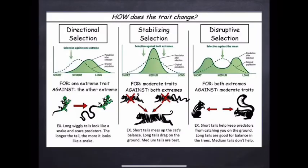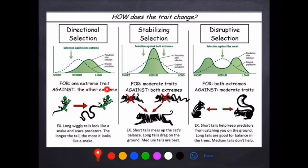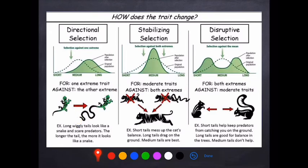To recap: directional selection selects for one extreme trait. For example, a gecko whose longer tail resembles a snake — predators are more likely to leave it alone, so the population is pushed towards longer tails. The short-tailed ones are more likely to be predated upon, the medium ones might survive, but the long-tailed ones will very definitely survive. The selective pressure pushes the population in that direction — this is gene shift.